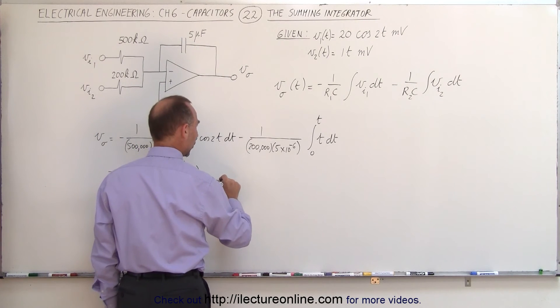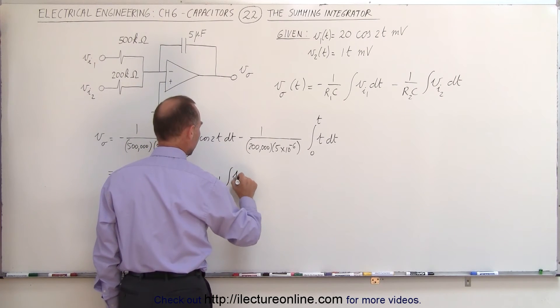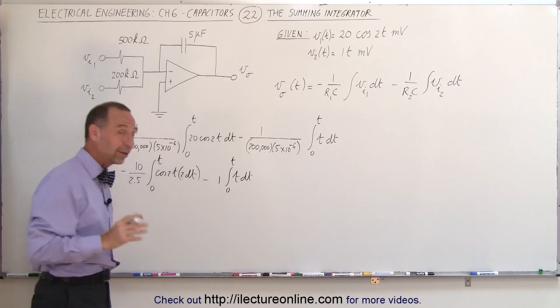minus, that would be 1, times the integral of tdt, from 0 to t. All right, now we're ready to integrate.